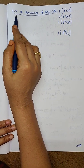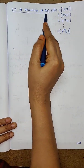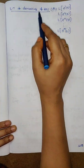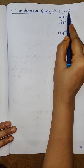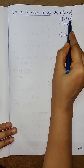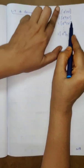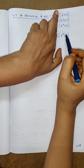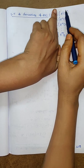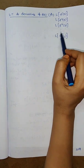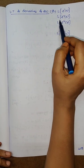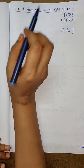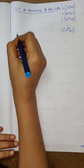Now we are discussing the Laplace transform of derivatives of f of t. The derivatives of f of t means f dash of t, f double dash of t, f triple dash of t, and so on up to the nth order derivative. For these derivatives we are finding the Laplace transforms under the property: Laplace transform of derivatives of f of t.